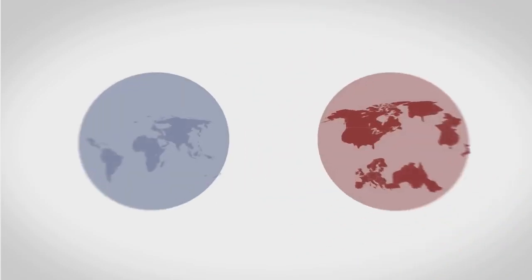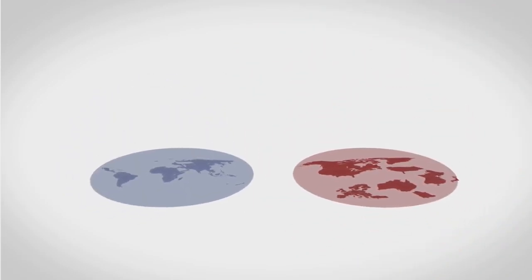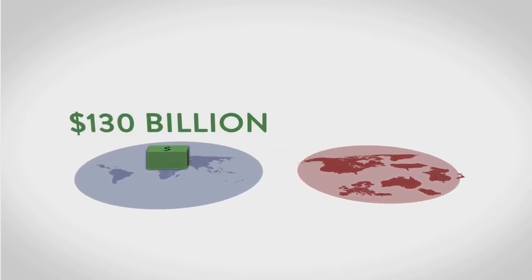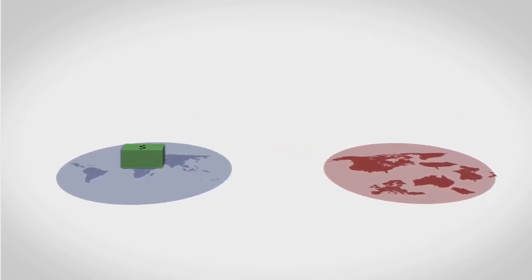Rich countries try to compensate for this by giving aid to poor countries, about 130 billion dollars each year. That's a lot of money. So then why does the wealth gap keep getting bigger?